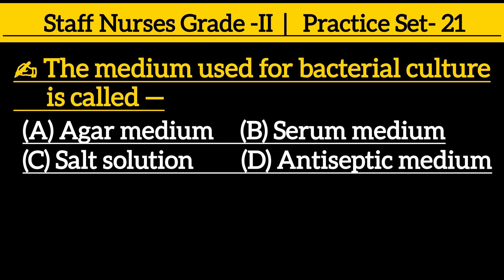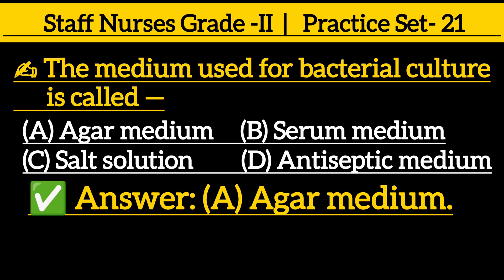The medium used for bacterial culture is called: Option A, agar medium; Option B, serum medium; Option C, salt solution; Option D, antiseptic medium. Correct answer is Option A, agar medium.